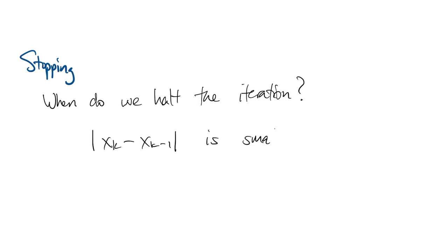Finally, we have to talk about how to stop the thing. In principle, it goes on forever, but we can't wait. So we can stop, of course, when the difference between successive iterates is small. And you can show that that's a pretty good estimate of the actual error.